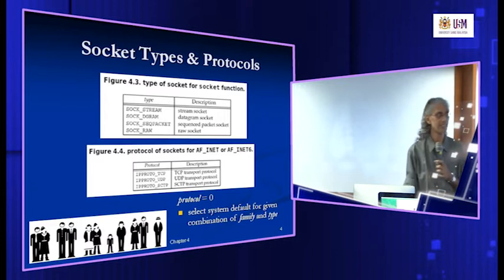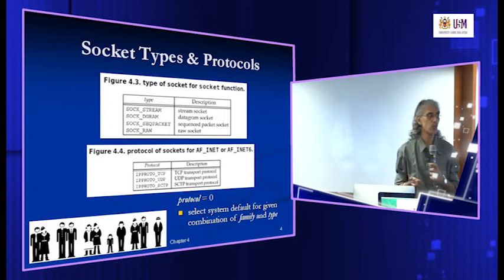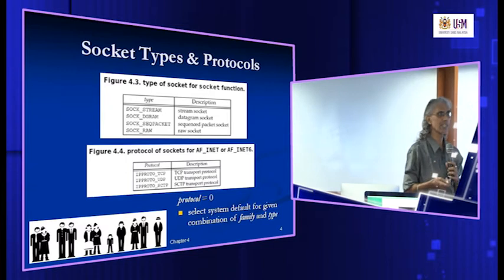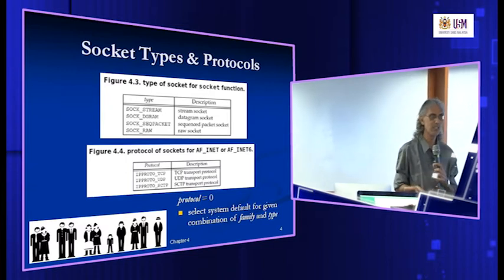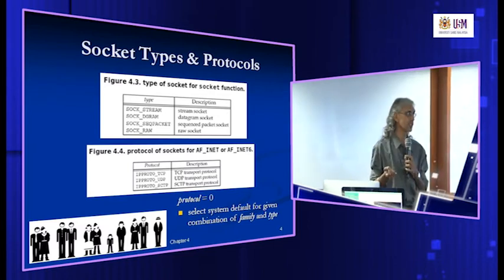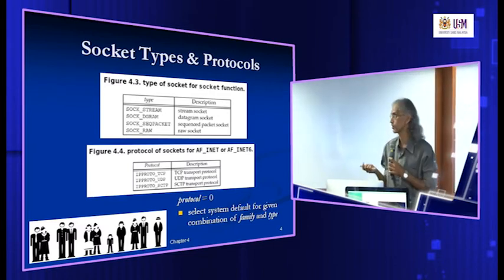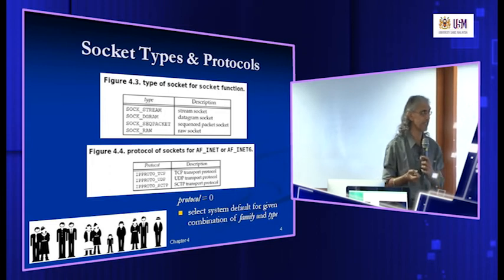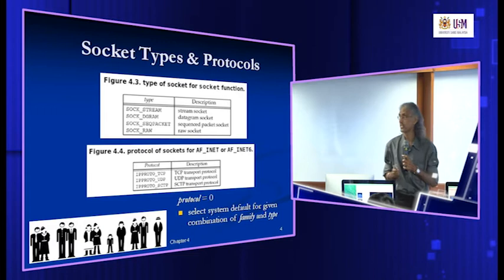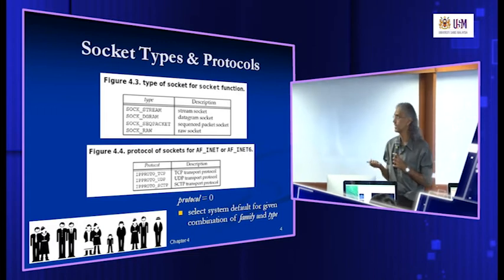The second parameter is the socket type. Here we indicate what type of socket it is — whether it's a TCP socket, UDP socket, or SCTP socket. If you want to create a UDP socket, we use SOCK_DGRAM. In the simple daytime client-server example, we have been using SOCK_STREAM.